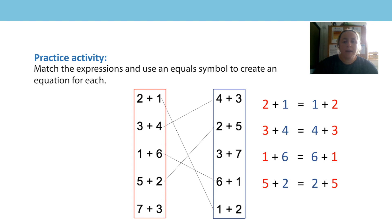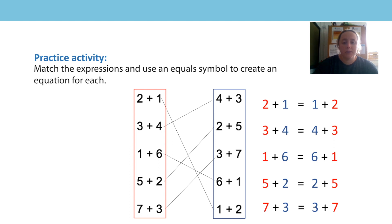Seven add three would match to three add seven. Both expressions have a three and a seven in them. In the first expression in the red box, the seven comes first and the three comes second, whereas in the second expression in the blue box, the three comes first and the seven comes second. The sum of both expressions is ten, so we can use an equal sign between both expressions.